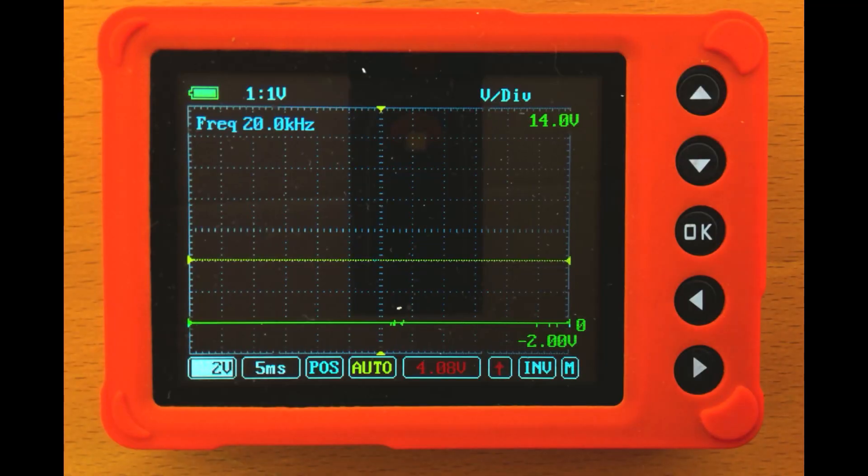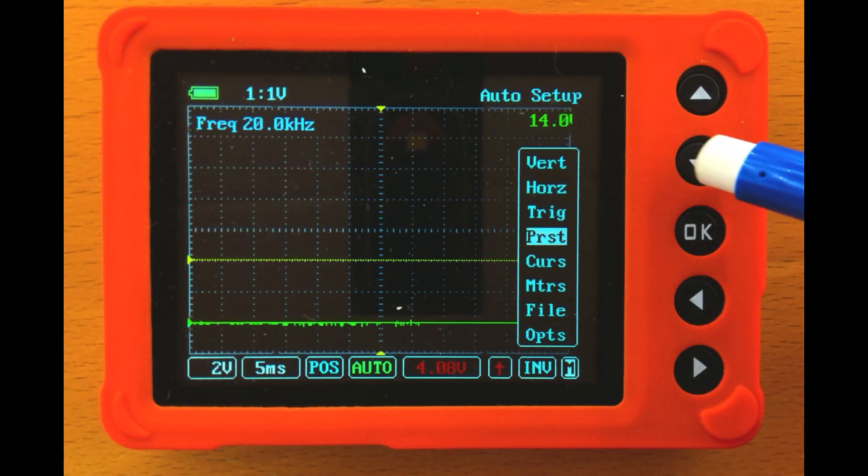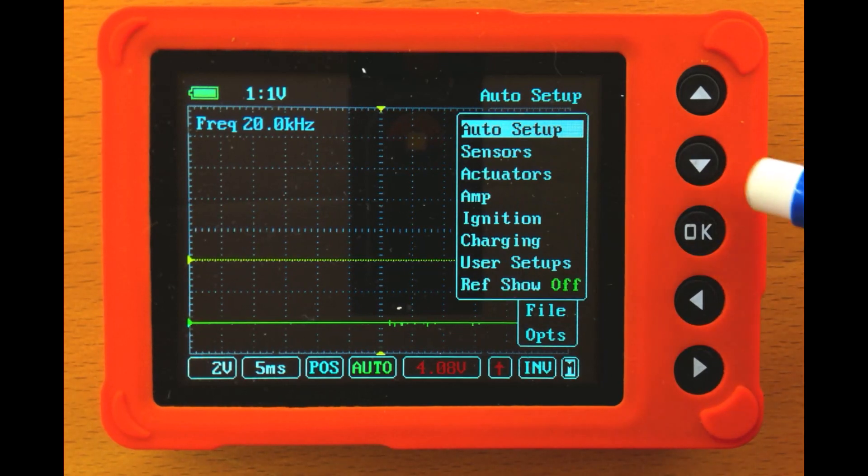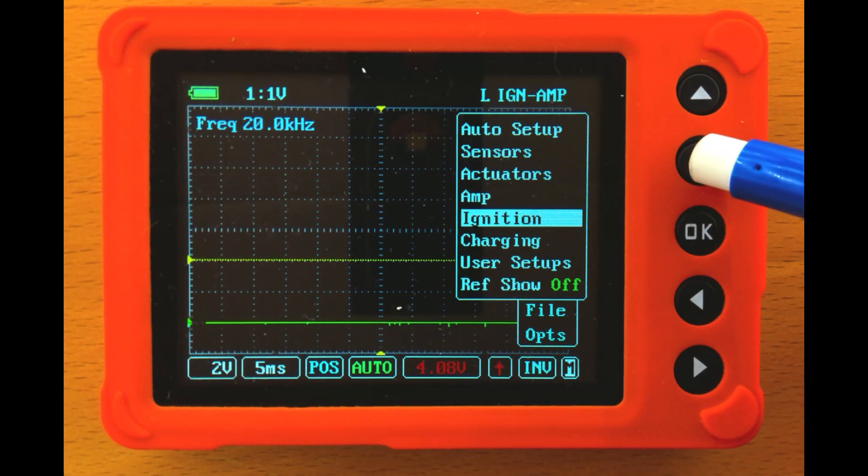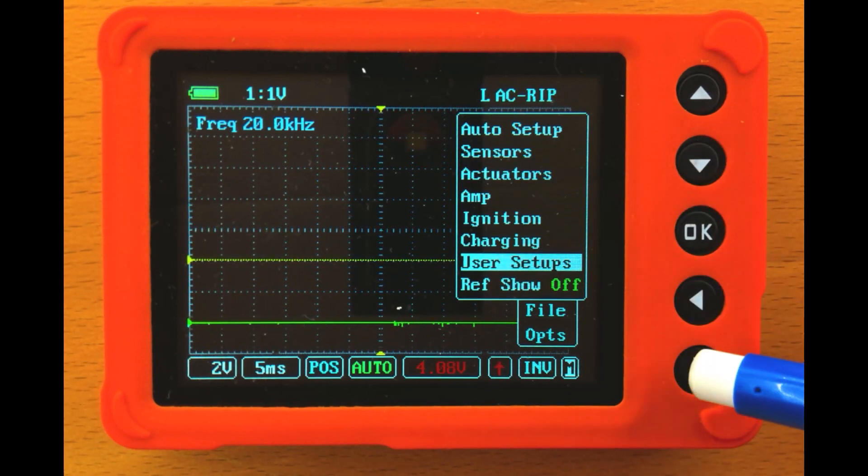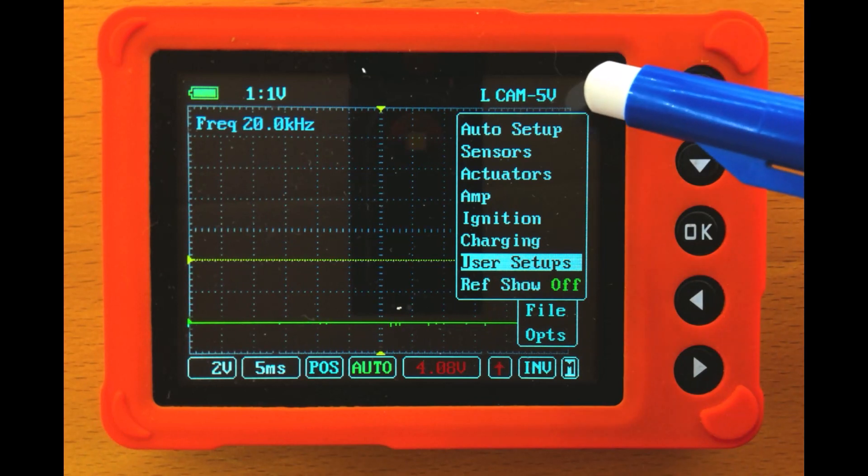To set the Uscope up to measure our CAM sensor, once again we will navigate over to the menu and press OK. We will go down to Presets, OK, then down to User Setups and press the left or right arrow button. And here I have labeled it CAM 5V.